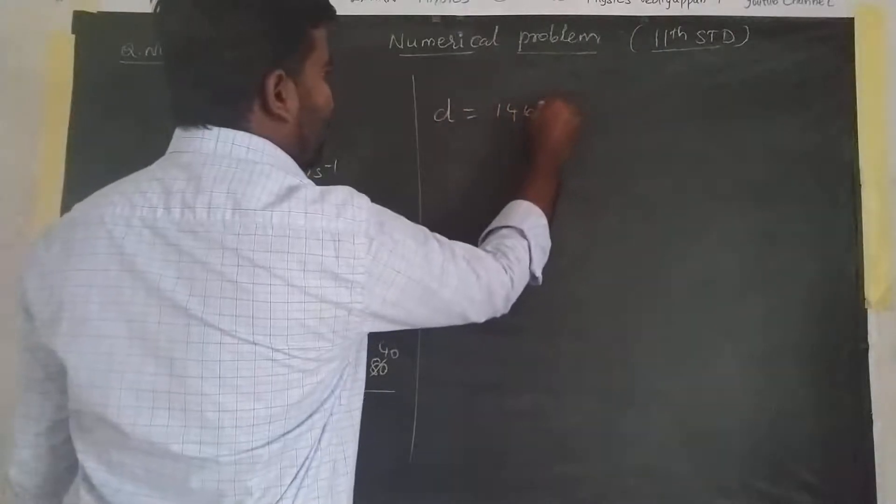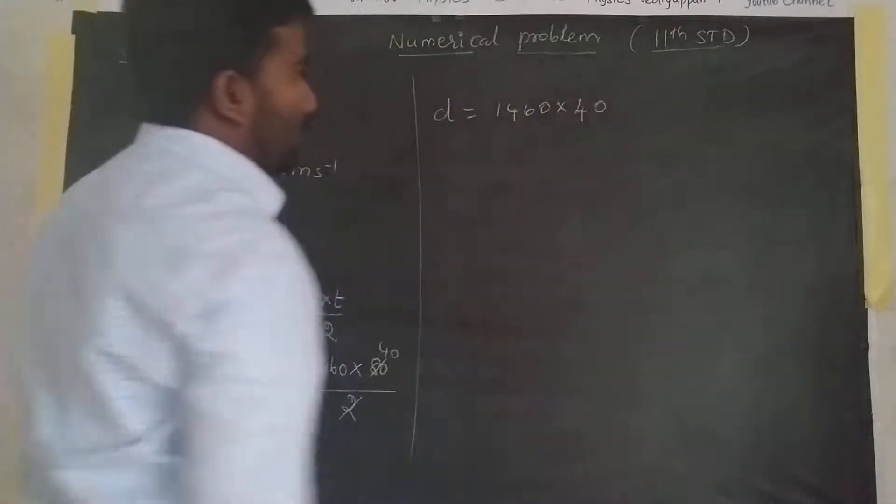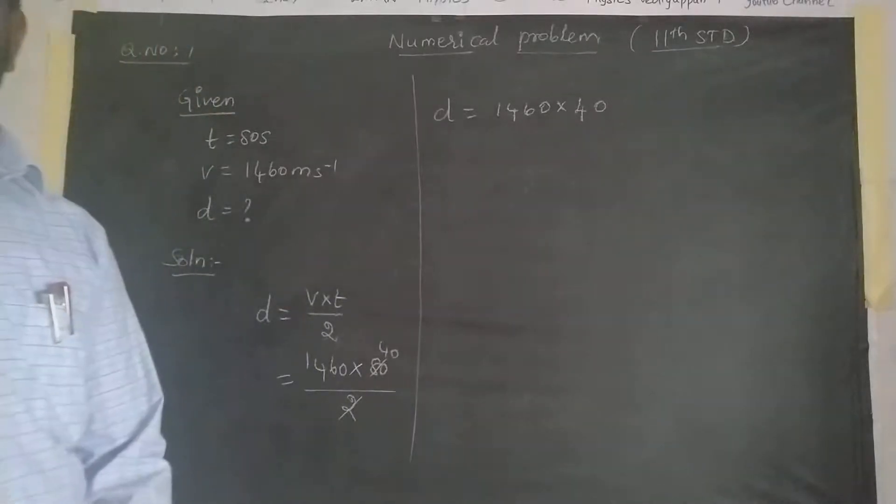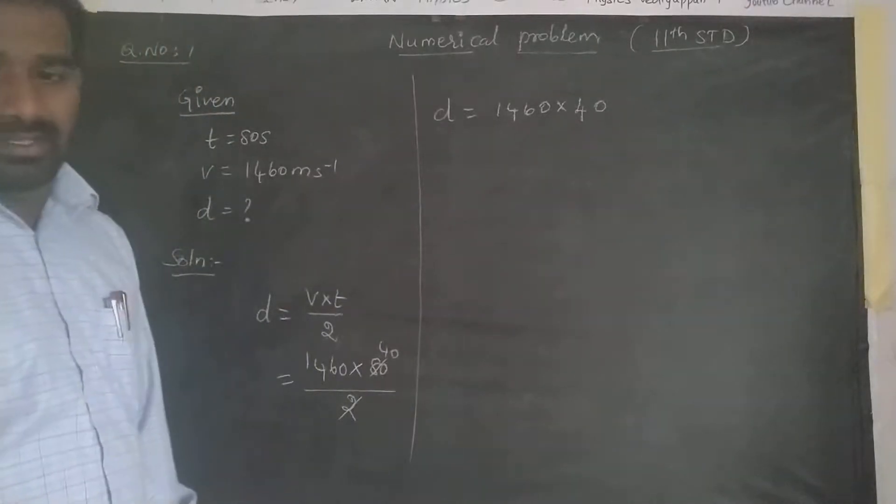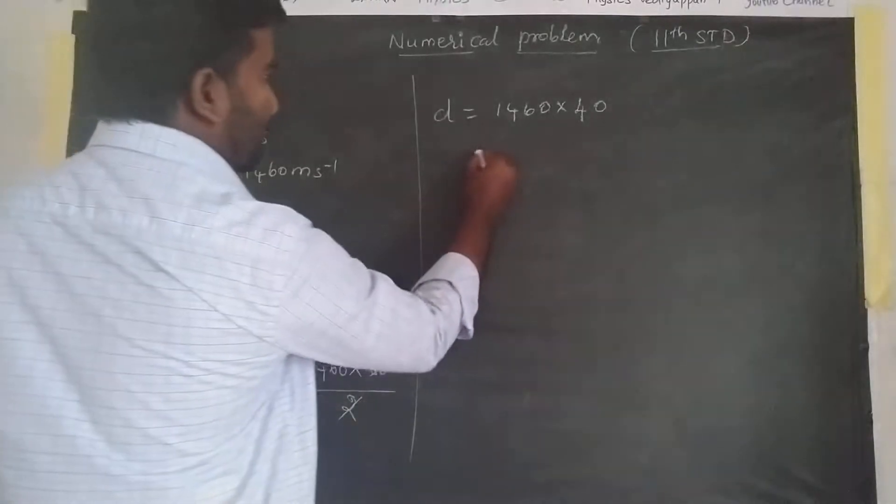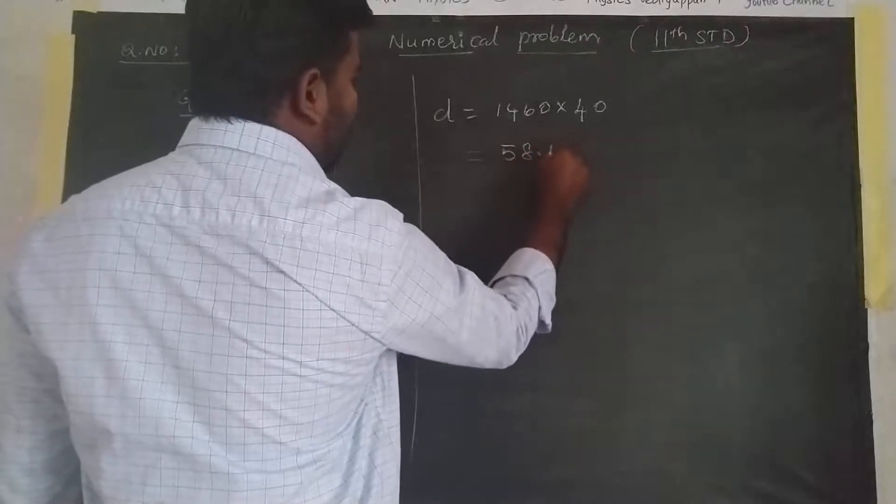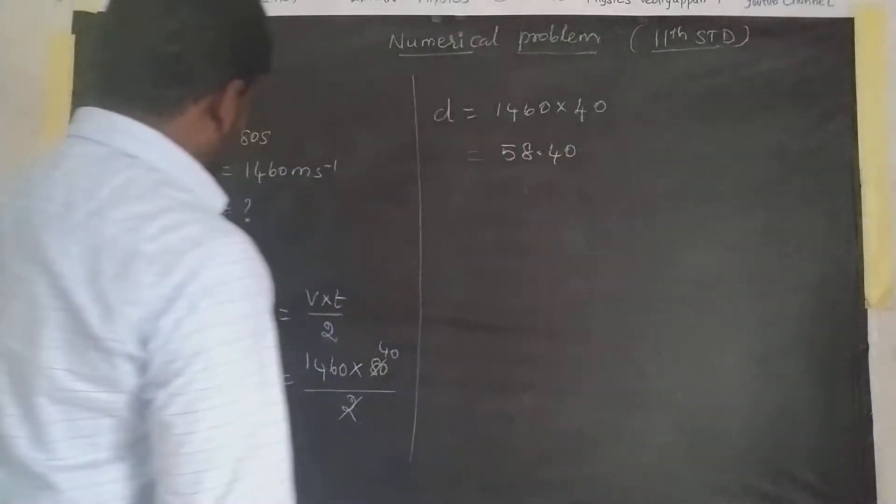Substituting the values: d equals 1460 into 80 divided by 2. The answer is 58.40 km.